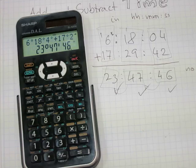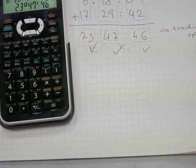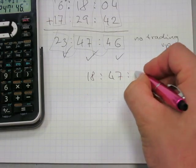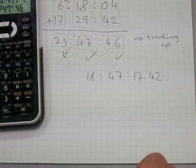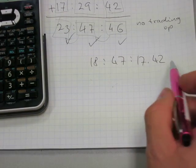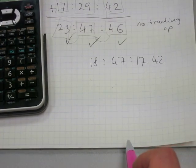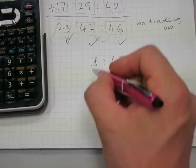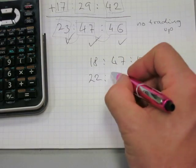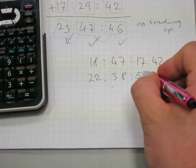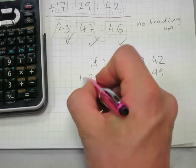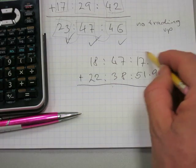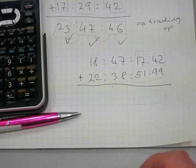Let's do another one with trading up so I can demonstrate. For example: 15 hours, 47 minutes, and 17.42 seconds — fancy seconds with tenths and hundredths place values will also work when adding time in this format. Then say 22 hours, 38 minutes, and 51.99 seconds. Let's add all of this up. Just as before, add the seconds and write the total in the seconds column.